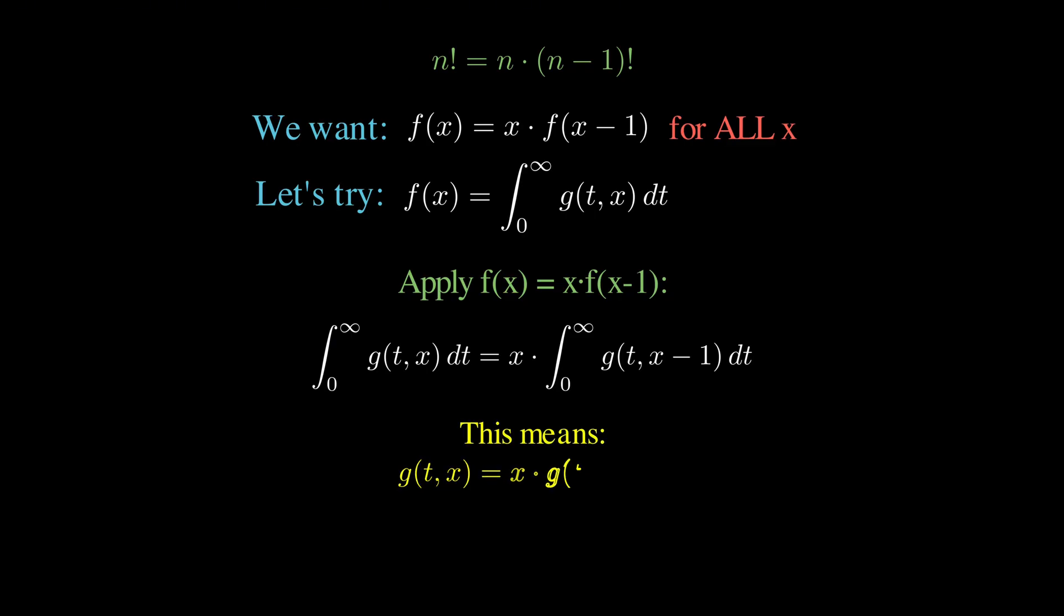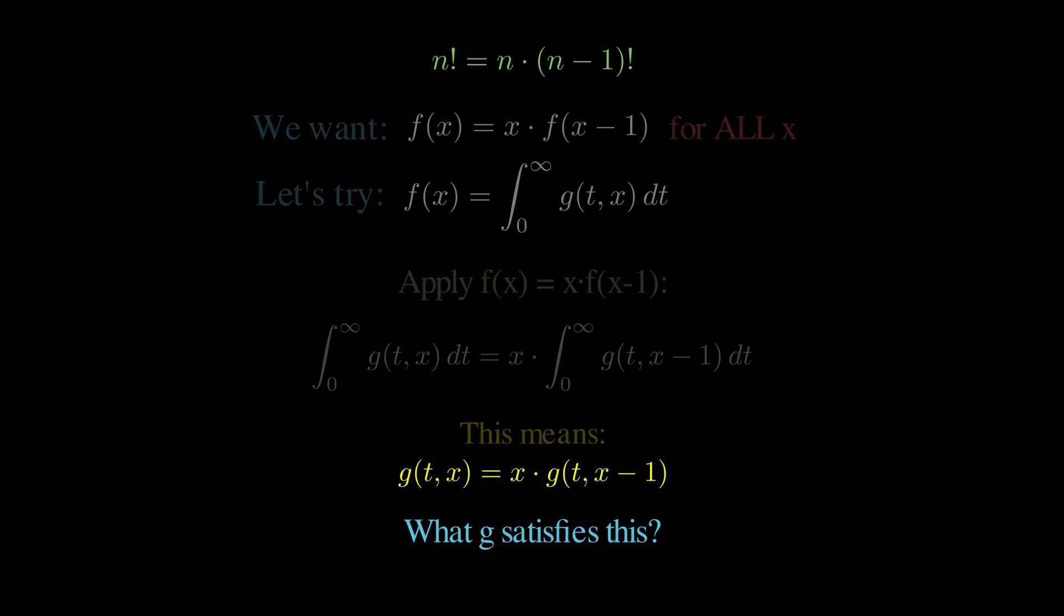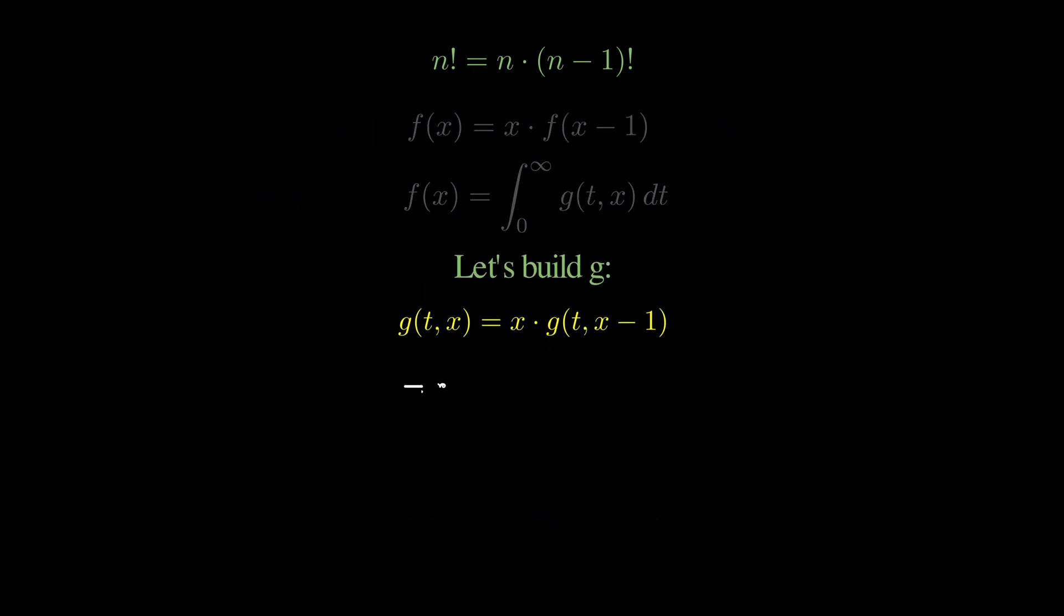For this to work, we need g of t and x equals x times g of t and x minus 1. The simplest function that does this is g equals t to the power x minus 1 times some function h of t that doesn't depend on x.